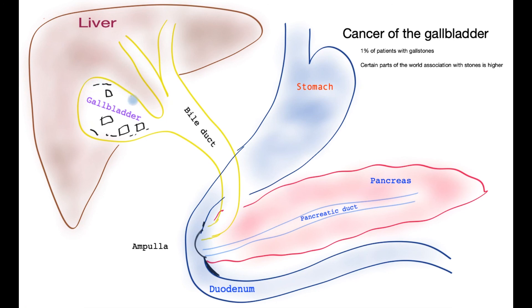Cancer of the gallbladder is a rare complication of chronic gallstones. Gallstones tend to irritate the lining of the gallbladder, and the mucosa can develop a polyp — a growth within the gallbladder — which can get bigger over time. In certain parts of the world the association between gallstones and gallbladder cancer is much higher, and in those countries gallstones mandate removal of the gallbladder. In general, if gallstones are not causing symptoms the gallbladder does not have to be removed. Treatment of gallbladder cancer depends on its stage, and ideally a radical resection is performed to clear the patient of cancer.